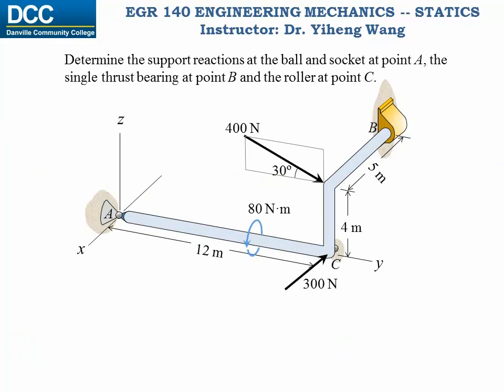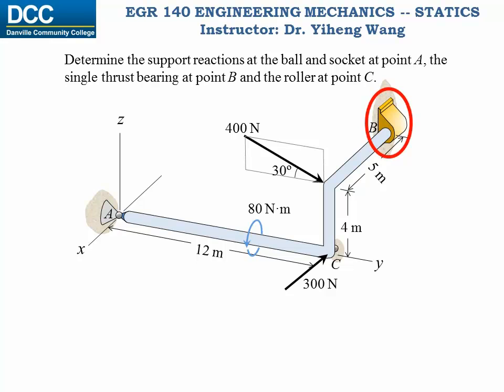Lastly, let's look at another example with a ball and socket support. A ball and socket support allows rotation about all axes but prevents translational motions along all three directions, and therefore exerts force reactions in all three directions but no moment reaction. In fact, the joints at our shoulders can be considered as ball and socket supports. The roller support exerts a force reaction only perpendicular to the contacting surface. And since this journal bearing is used in combination with the other supports, it only exerts force reactions along the y and z axes.